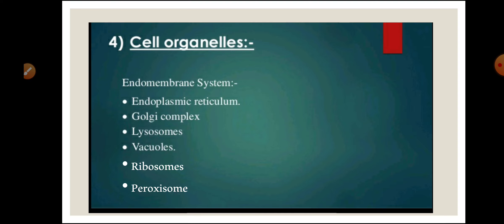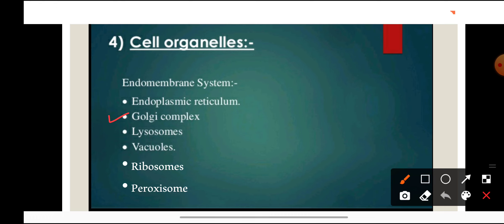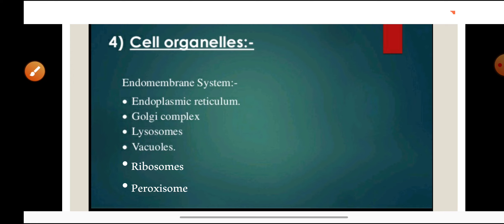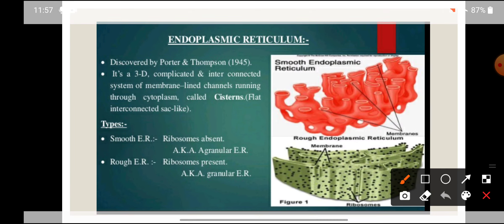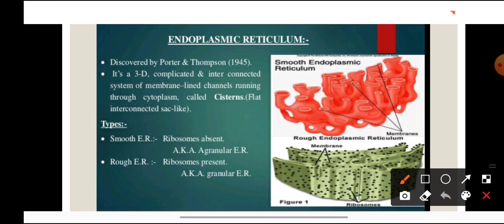Today we are going to study some of the cell organelles like endoplasmic reticulum, Golgi complex, lysosomes, vacuoles, ribosomes and peroxisome. We will study about the structure and functions of these cell organelles one by one. The first cell organelle is endoplasmic reticulum.